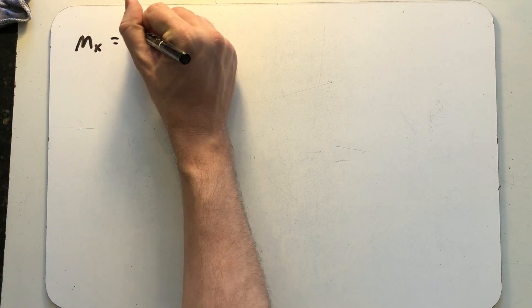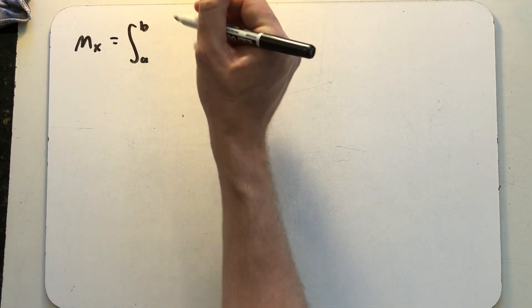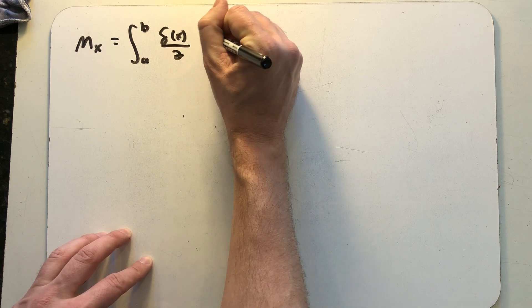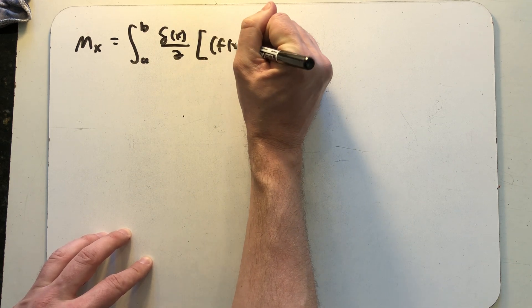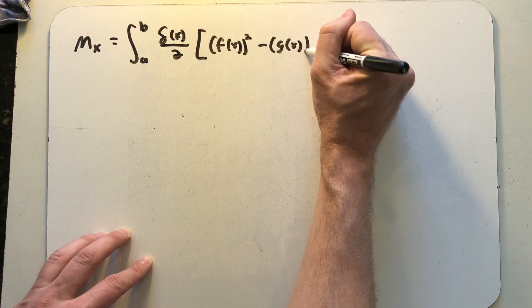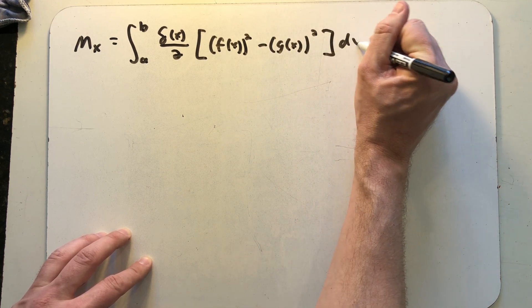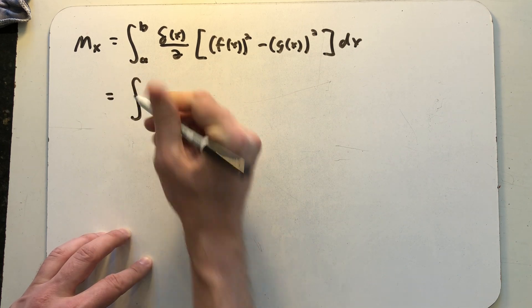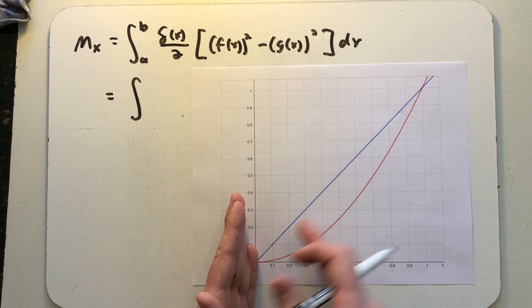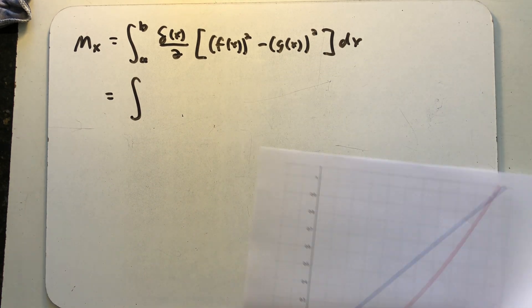So the moment about the x-axis is equal to this definite integral. From our diagram of the region we can see that we're starting at x equals zero and then ending at x equals one.